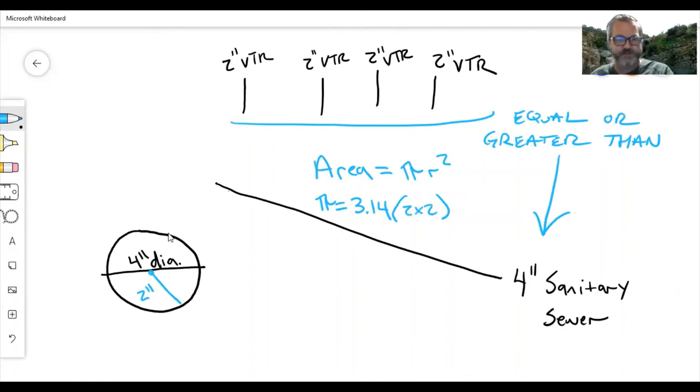Two times two is four, 3.14 times four. I end up with 12.56 square inches. So I have 12.56 square inches of surface area in my four-inch circle, this bad boy right here.